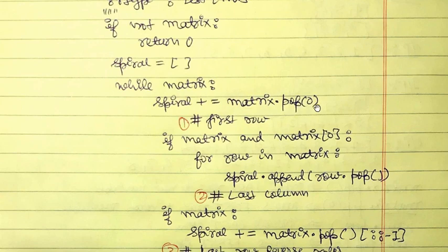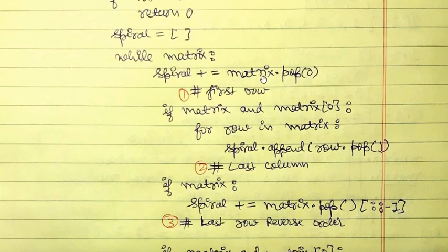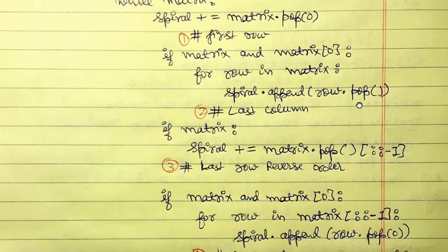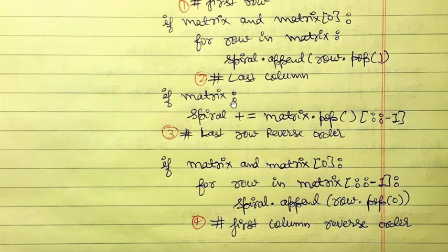Next, we check `if matrix and matrix[0]` — if there is at least one row. If yes, for each row in the matrix, we append `row.pop()` — the last element of each row — to spiral. Then we again check `if matrix` — if non-zero elements remain after popping the last columns. If yes, we pop the last row using `matrix.pop()` and reverse it with `[::-1]`.